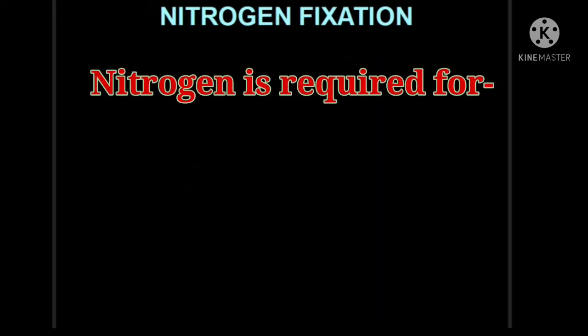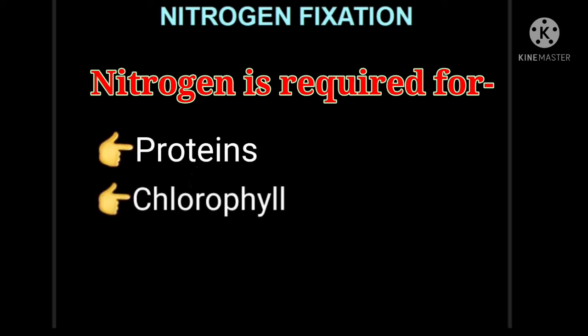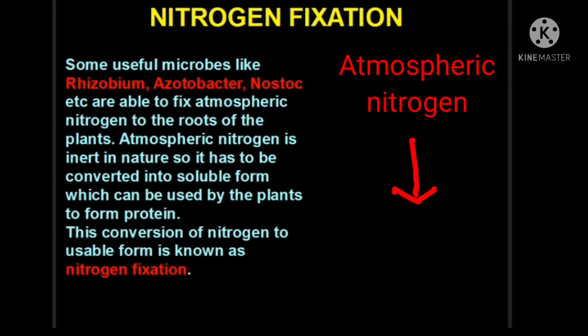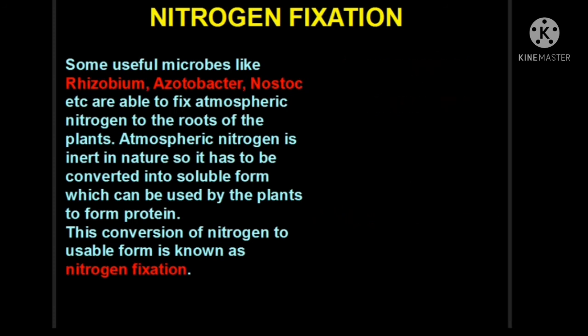Nitrogen is the basic element for the synthesis of proteins, chlorophyll, and vitamins. Nitrogen fixation is the process in which atmospheric nitrogen is converted into a usable form—that is nitrate, nitrite, and ammonium. Such usable forms can be easily absorbed by the roots of plants and used to synthesize proteins.